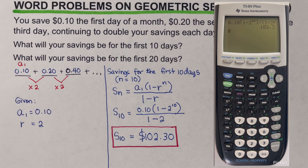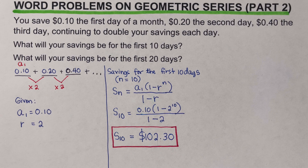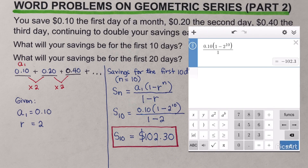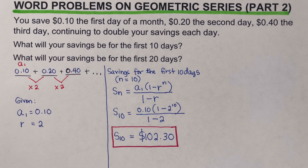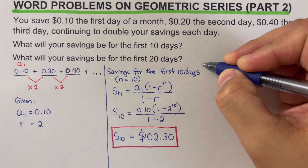We can also use the TI-84 to evaluate this equation, and as you can see the answer is still the same — 102.30. You can also use Desmos to set this up, and the answer is still the same: the savings for the first 10 days is $102.30.